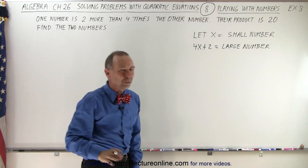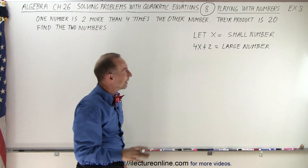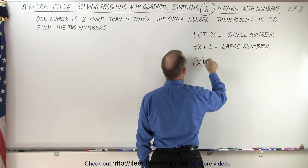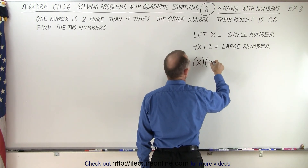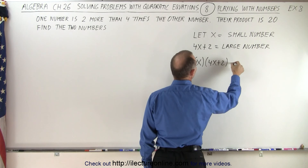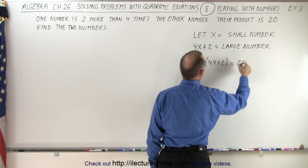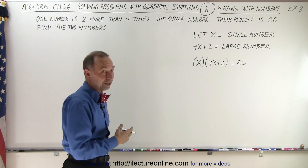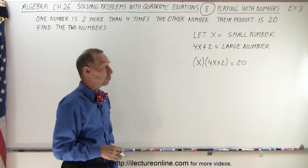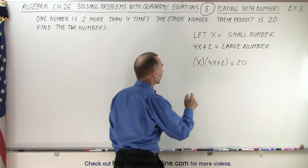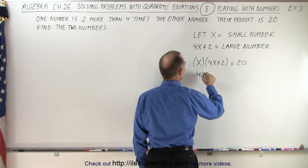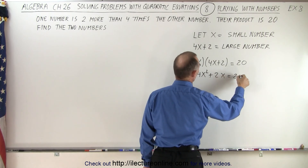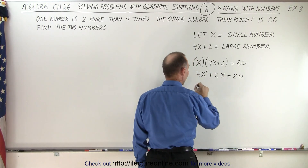Now we're told that the product is equal to 20, which means that x times (4x + 2) is equal to 20, and now we're supposed to solve this for x. That looks like it's going to be a quadratic equation. So let's multiply. We get 4x² + 2x = 20.